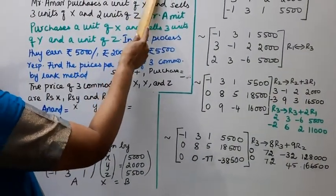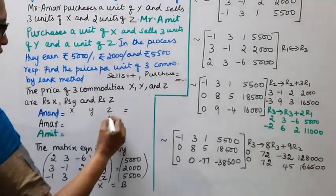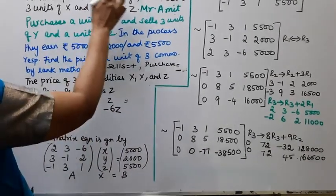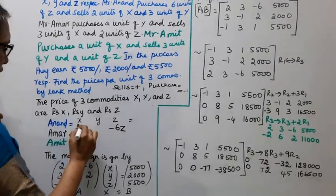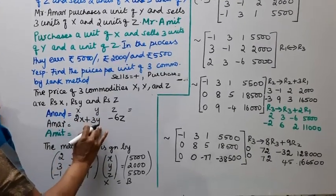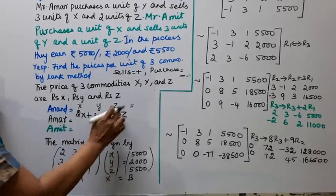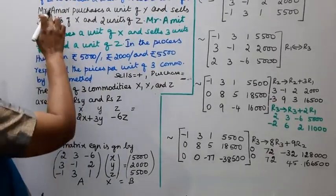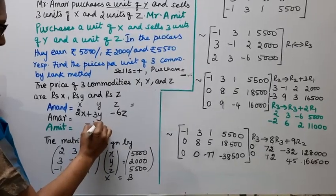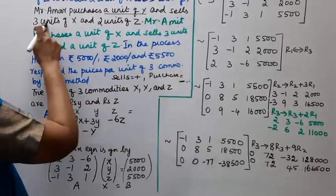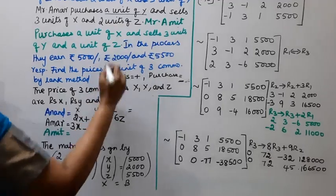Mr. Anand purchases 6 units of Z, so that is minus 6Z. Anand sells 2 units of X and 3 units of Y, so that is plus 2X plus 3Y. For Amir: purchases 1 unit of Y, so minus 1Y, and sells 3 units of X and 2 units of Z, so plus 3X plus 2Z.